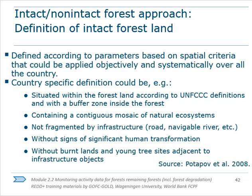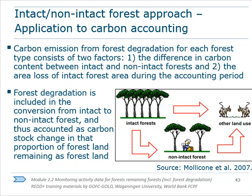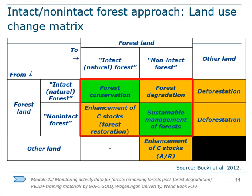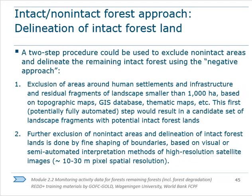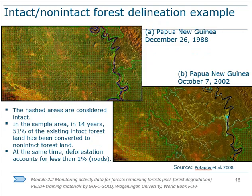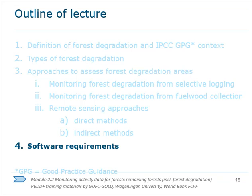Here we see the different potential country-specific definitions that could be applied for the definition of intact or non-intact forest areas. Carbon emissions from forest degradation would then be derived by combining data on the difference in carbon stocks between the intact and non-intact forest, as well as the area loss of intact forest over the accounting period. Here's a land use change matrix that would be applicable to demonstrate how land use conversions would be treated under this indirect approach — any intact forest going to non-intact forest would be considered forest degradation. The next few slides are a lot more detail on this approach, which I encourage you to read at your own leisure.